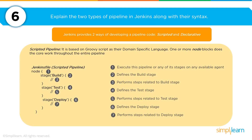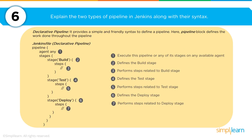You'll be asked to explain the two types of pipeline used in Jenkins along with their syntax. A scripted pipeline is based on Groovy script as its domain-specific language, and uses one or more node blocks throughout the pipeline. On the left-hand side you can see what the script looks like, and the right-hand side shows the declaration for each section. The second type is a declarative pipeline, which provides a simpler and friendlier syntax to define what the pipeline should look like, using blocks to define the work completed.